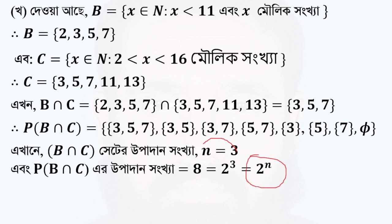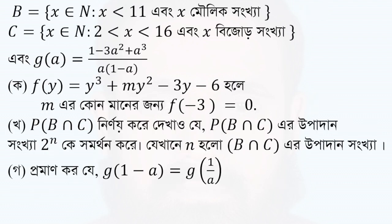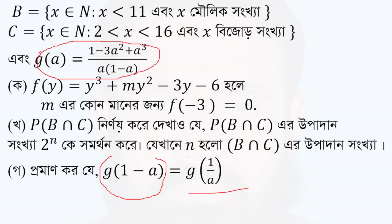The B-intersection C-A-S-3 is equal to 2, 3. So the B-intersection C-A-S-3 is equal to 1. So we will take the g of 1-a.